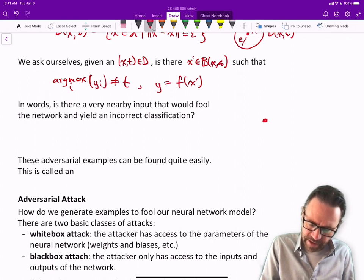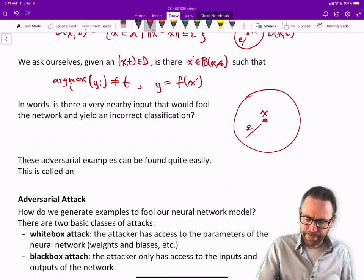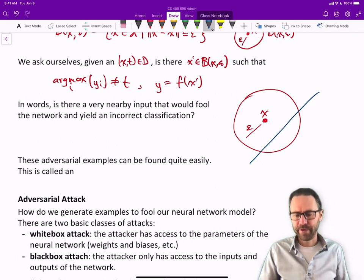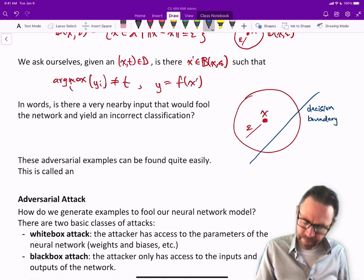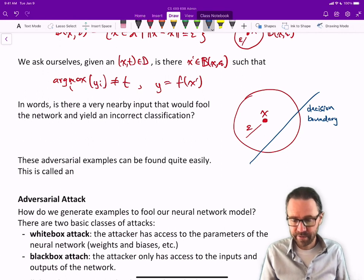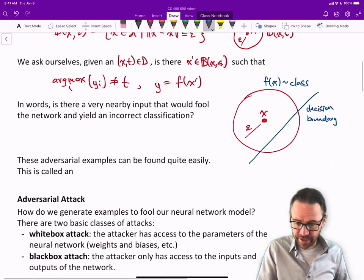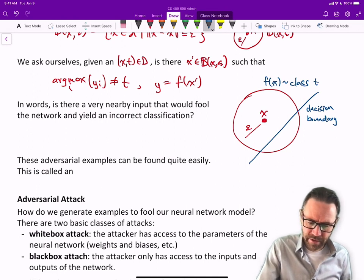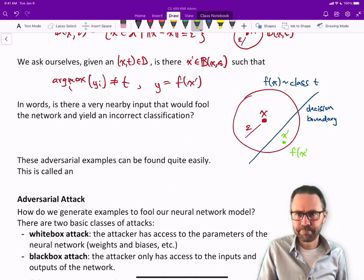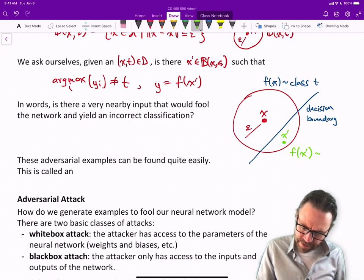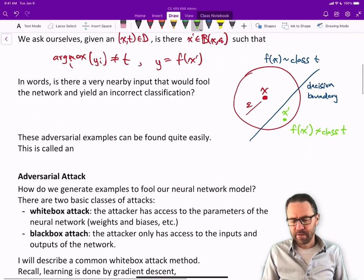In a drawing, here we have x and we've got this epsilon neighborhood around x, and maybe here's our decision boundary. So x is on the right side of the decision boundary, so f(x) is of class t. But over here we have an x', and f(x') is not of class t.